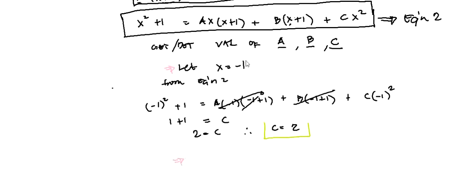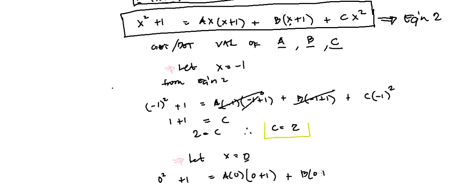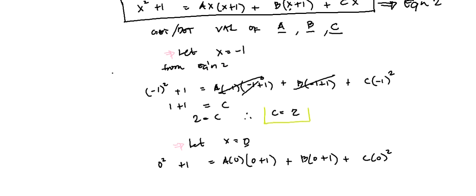Let's find another constant. If we let x equal 0, then the A term and the C term both vanish. Substituting x equals 0 into Equation 2: 0 squared plus 1 equals A times 0 times 1, plus B times 1, plus C times 0 squared. This simplifies to 1 equals B. Therefore, B equals 1.